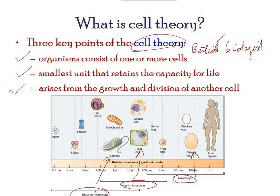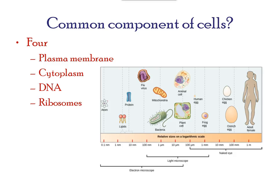From the simplest cells to the ostrich egg, all cells share four common components: first, a plasma membrane — an outer covering that separates the cell's interior from its surrounding environment; second, cytoplasm — a jelly-like region within the cell in which other cellular components are found; third, DNA — the genetic material of the cell; and fourth, ribosomes — particles that synthesize proteins.